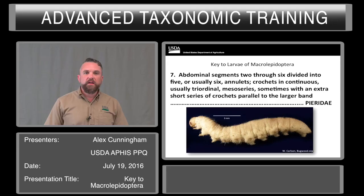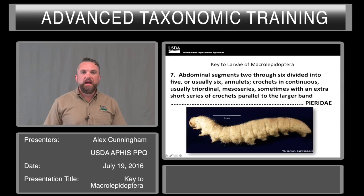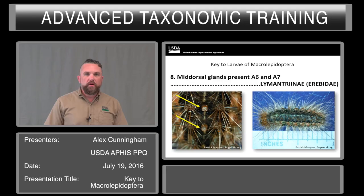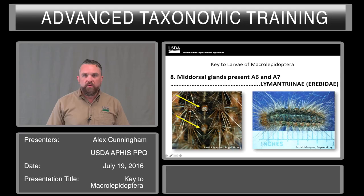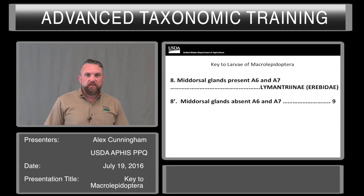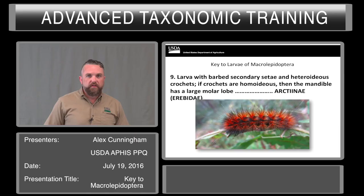Here again is the Pieridae — you can see the lines showing those individual annulets. Now something very characteristic: we're going to take this one out to a subfamily. Many of you are familiar with this being a family, but mid-dorsal glands on A6 and A7 separate out the Lymantriinae. The gypsy moth is here with those very characteristic glands. Basically, if it looks like an arcteine but has these glands, this is an erebid in the subfamily Lymantriinae. Without those glands on A6 and A7, we move on to the Arctiinae.